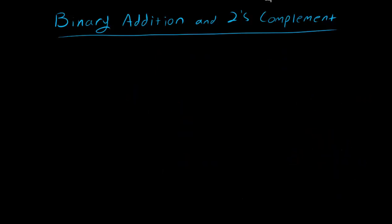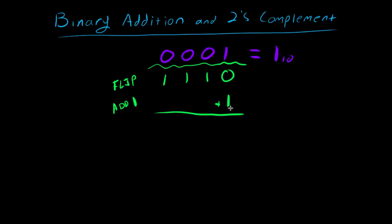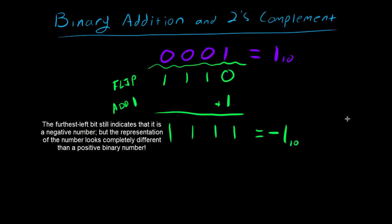There is a better way to represent negative numbers in binary, especially for building simple circuits — and that is called 2's complement. To calculate 2's complement, we do a two-step process. Starting with our representation of 1 (0 0 0 1): first, we flip every single bit — 0 becomes 1, 1 becomes 0 — giving us 1 1 1 0. Then we add 1 to that result, giving us 1 1 1 1. We say that 1 1 1 1 represents negative 1 in our base 10 system.